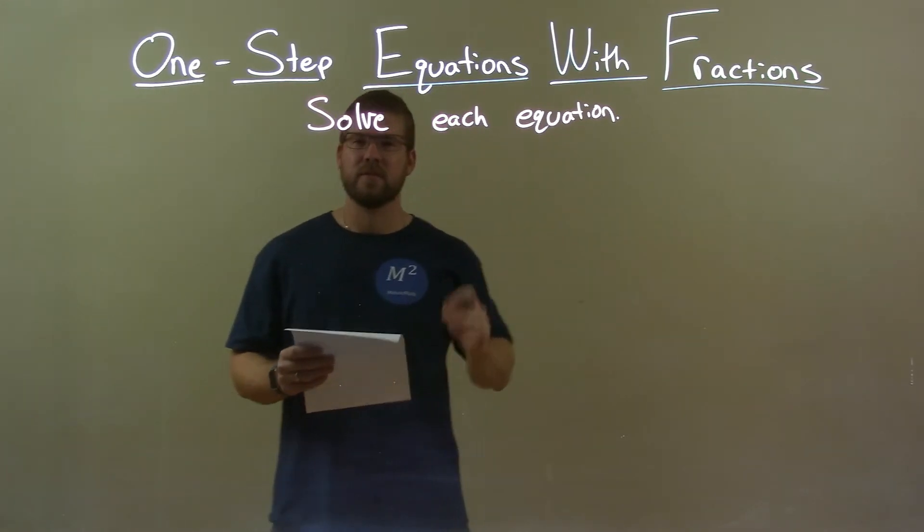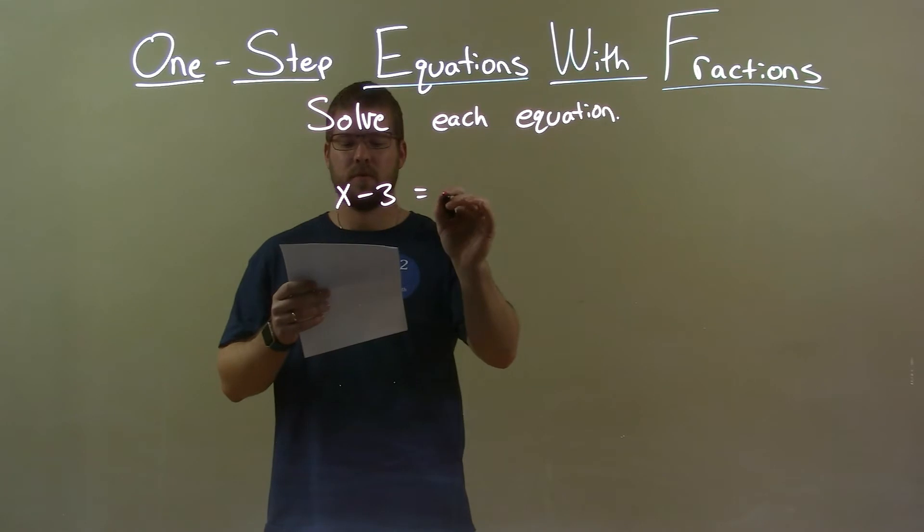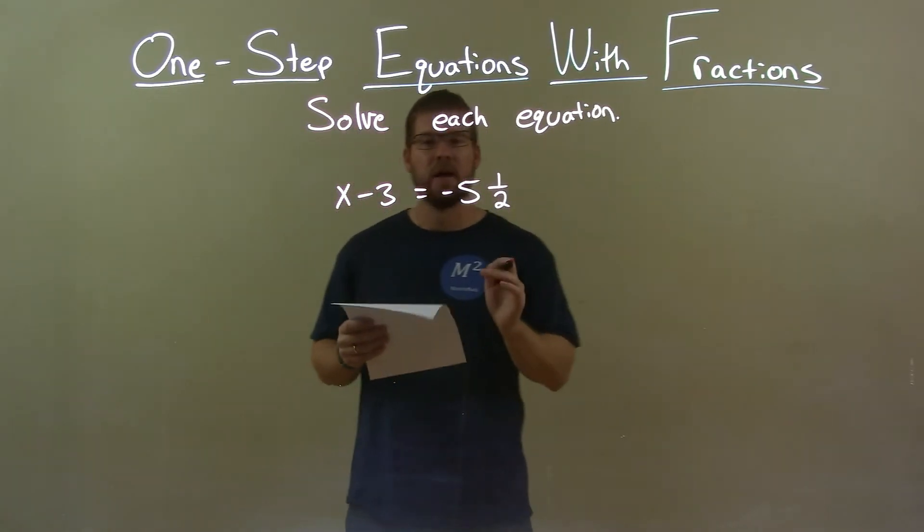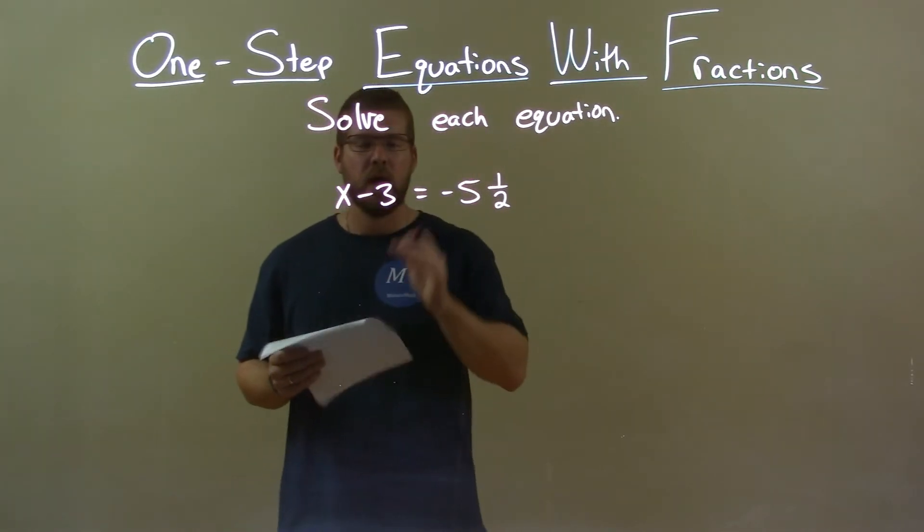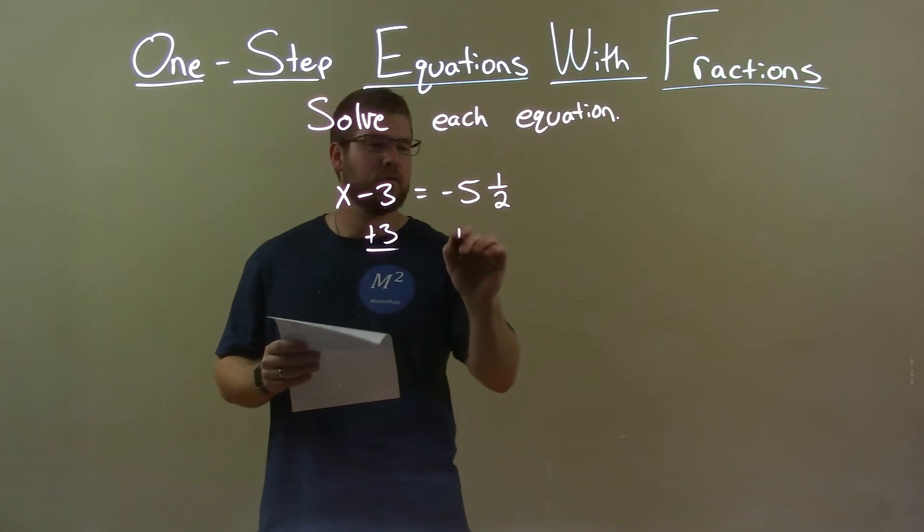If I was given this equation: x minus 3 equals negative 5 and 1 half. Well, I want to get x by itself. We're subtracting 3 from it. The opposite of subtraction is addition. So, if I add 3 to both sides,